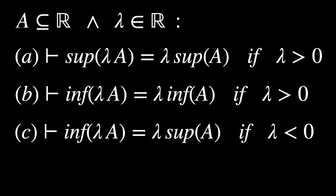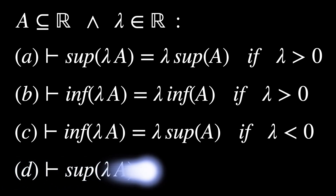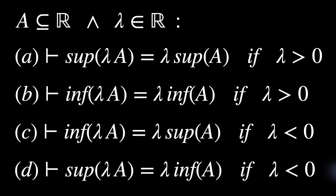We'll also prove that the infimum of the set lambda A equals lambda times the supremum of A, as long as lambda is less than 0. Finally, we'll prove that the supremum of the set lambda A equals lambda times the infimum of A, as long as lambda is less than 0.